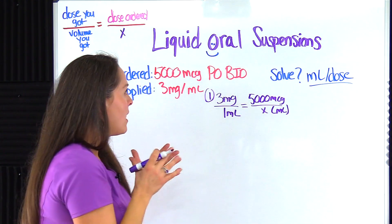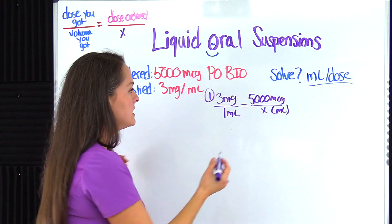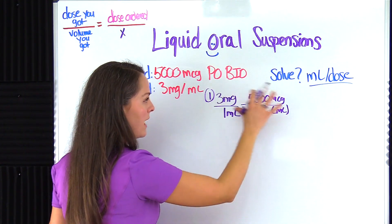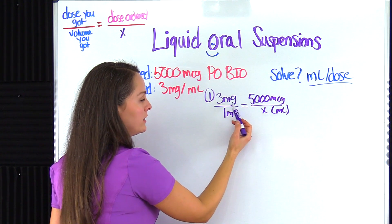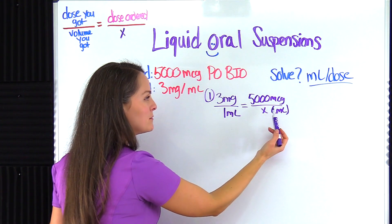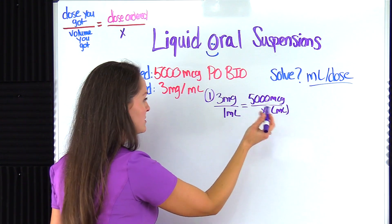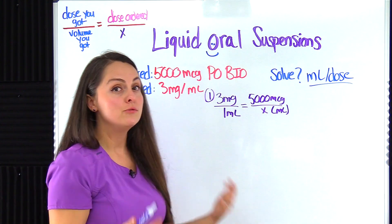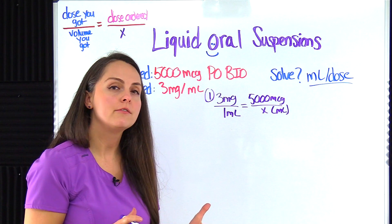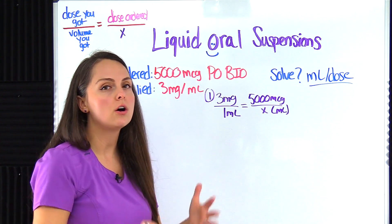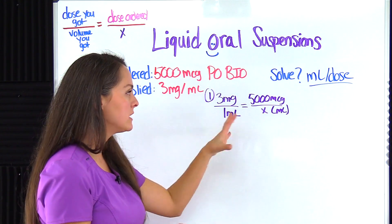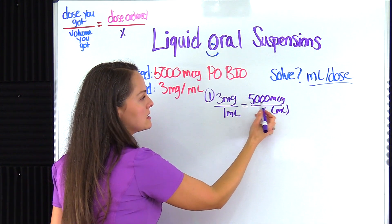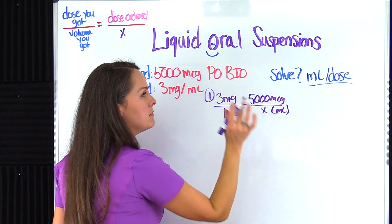One thing to remember when solving these is that the units of measurement across the two ratios should match each other — milligrams and milligrams, or micrograms and micrograms. Looking at the problem right now, I can see the units do not match, so I have to do some converting before I can solve for x. Right now I need to get this 5,000 micrograms into milligrams.